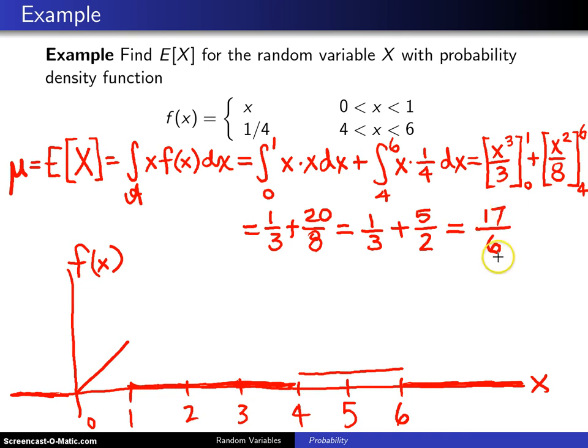Now, 17/6, that was 2 and 5/6, falls right here, and that is the balance point. Notice in this case, we have a balance point that is not in the support of X, and as noted earlier, that can happen, and it does in this case. So the balance point here, 2 and 5/6, is the population mean, also known as the expected value of X, or mu.